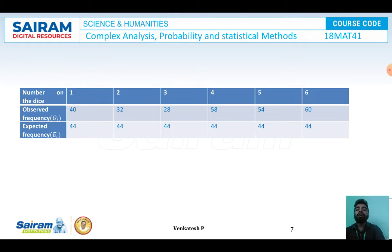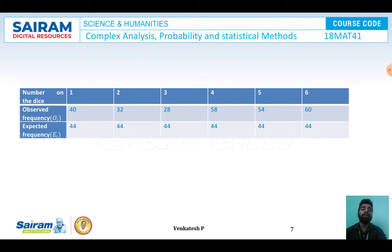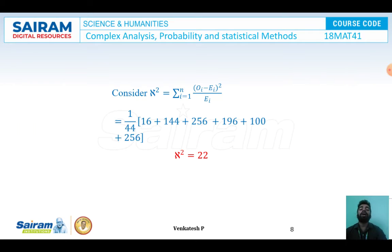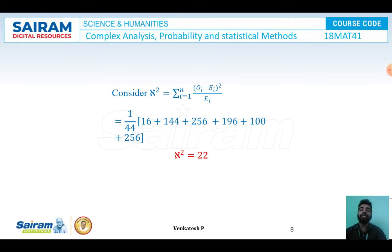Therefore, the observed and expected frequencies are: x=1: O_i=40, E_i=44; x=2: O_i=32, E_i=44; x=3: O_i=28, E_i=44; x=4: O_i=58, E_i=44; x=5: O_i=54, E_i=44; x=6: O_i=60, E_i=44. Chi-square equals summation of (O_i minus E_i)^2 divided by E_i. Taking 1/44 as a common factor, we get (16 + 144 + 256 + 196 + 100 + 256) / 44, so the chi-square value equals 22.